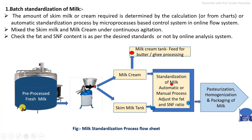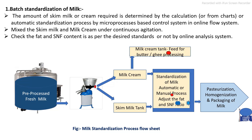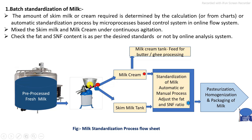In the first method, the received fresh milk is pre-processed, which includes a clarification process, after which it is stored under refrigeration. It is then pre-heated and passed into cream separator machines for separation of the milk cream from the skim milk using a disc centrifuge.